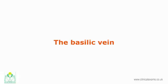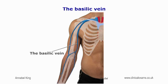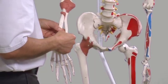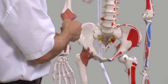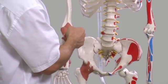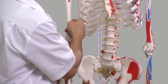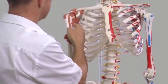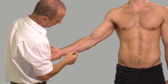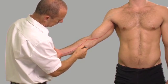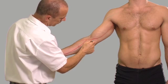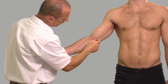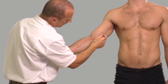The basilic vein can be traced in the medial aspect of the forearm. As it ascends anterior to the medial epicondyle of the humerus, it continues medially in the arm until the axilla, when it becomes the brachial vein, then the axillary vein.